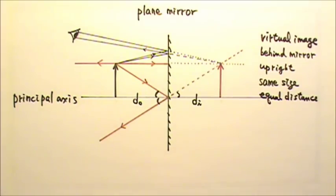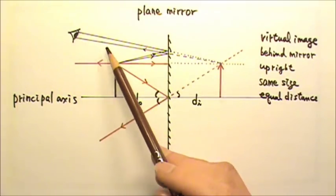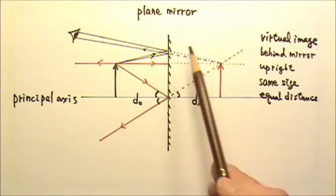We can see depth because our pupils have size, so we can receive multiple rays from one point.